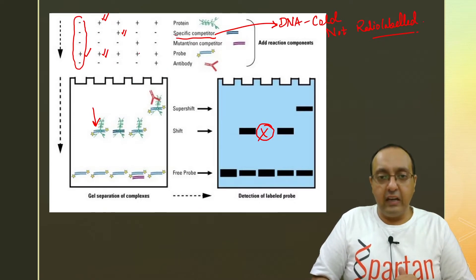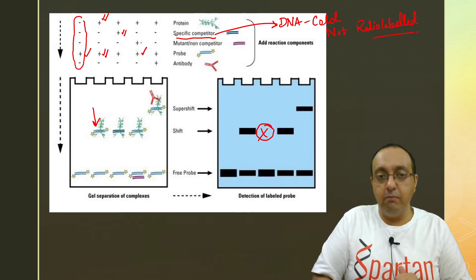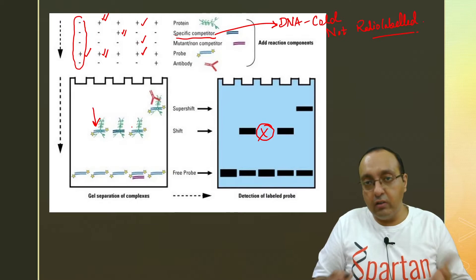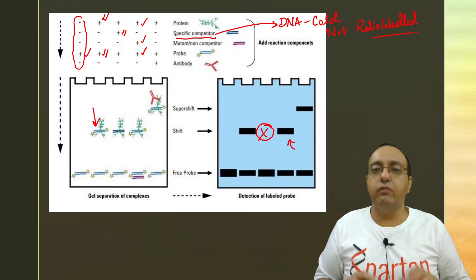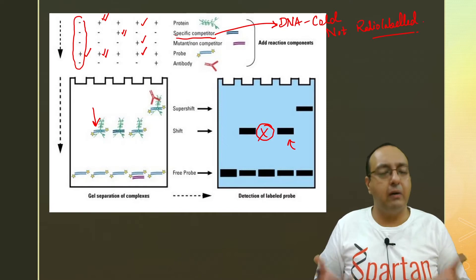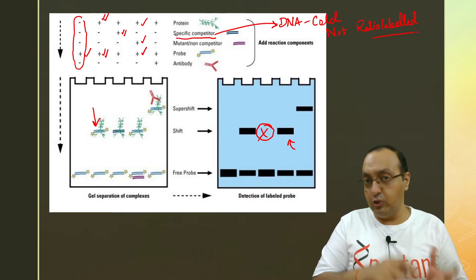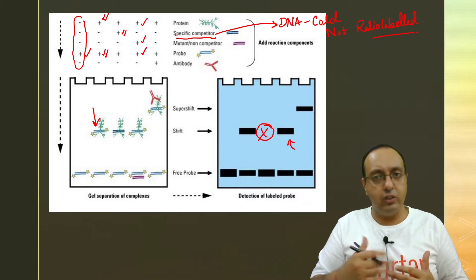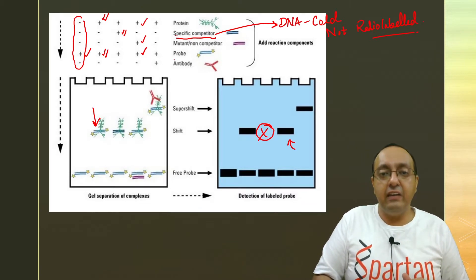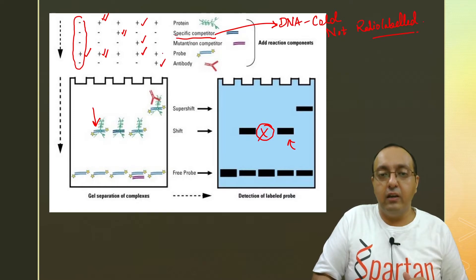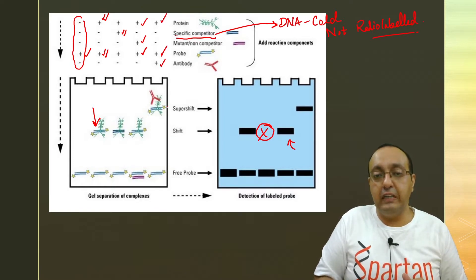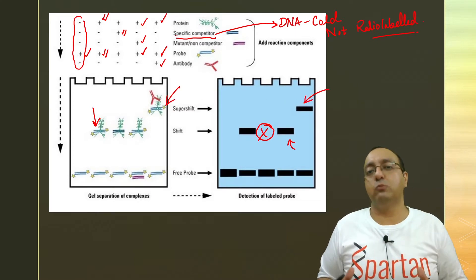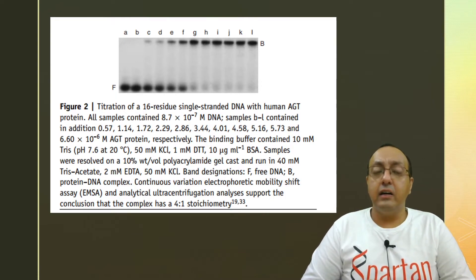So in the fourth lane, we have probe plus mutant or non-competitor and the protein. So again, this should return your shift. So that's what we see here, because now we have a mutant or non-competitor, some other DNA band, which does not compete with your DNA fragment of interest. So it should return the shift. And finally, we have addition of antibody, antibody probe and protein. So this will lead to a super shifted complex, which is shown here, which has the lowest mobility.